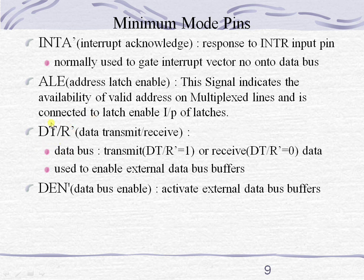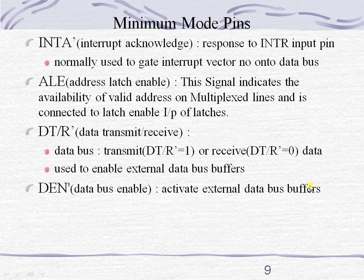The DT/R bar pin indicates data direction: if programmed to 1, the processor is transmitting data; if 0, the processor is receiving data from the external world. The DEN bar — data bus enable — is an active low pin. It is activated to enable all the data buffers inside the processor, and it also indicates valid data on the multiplexed lines.